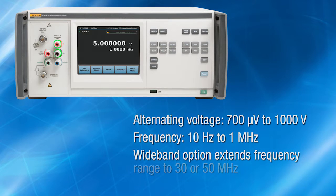A wideband voltage option extends the frequency range to 30 or 50 megahertz to meet the calibration requirements of Fluke Calibration 5700A, 5720A and 5100 series wideband options.